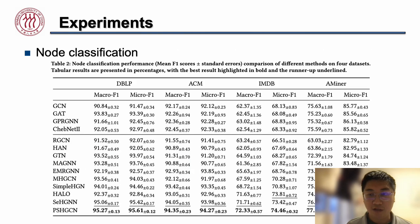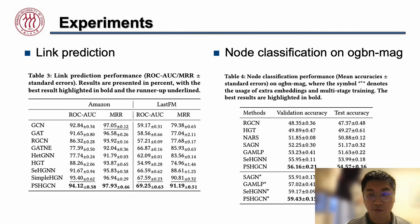In the experiment part, we first conduct the node classification experiment to evaluate the performance of PSHGNN compared to baselines. PSHGNN achieves the best performance on all datasets. We then perform link prediction on two datasets and node classification on a large graph, further demonstrating the ability for link prediction and scalability of PSHGNN.